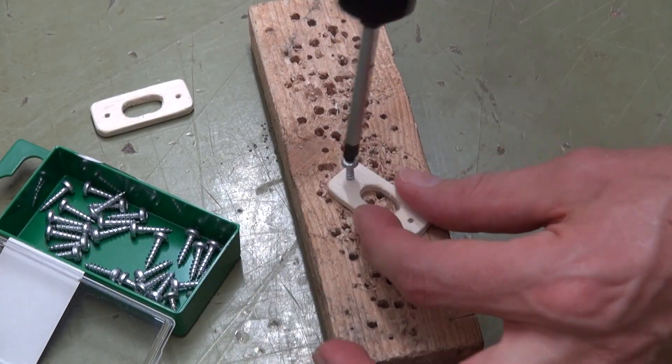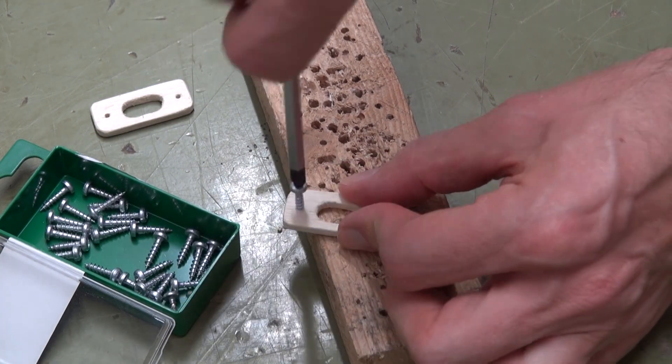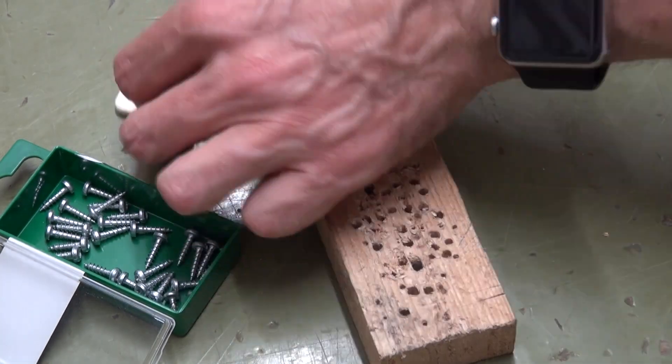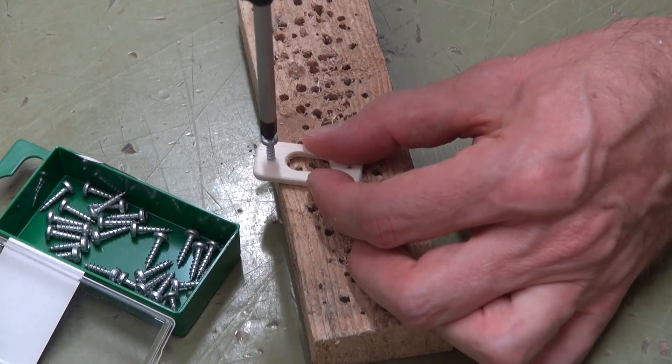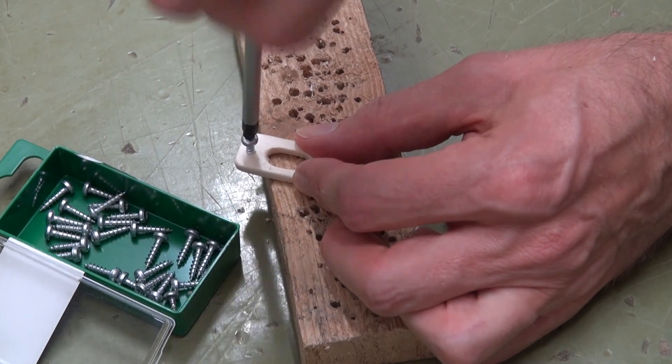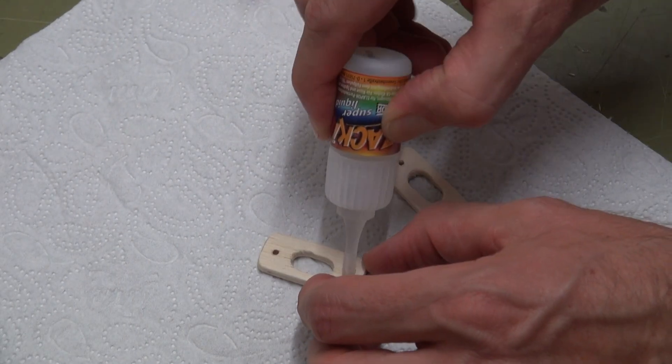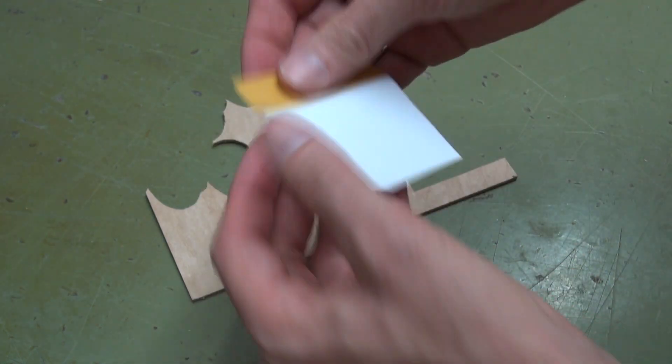Take a 3 by 12 millimeter pan head screw and screw it in and out once for each of the four holes. Then add some CA glue to harden the threads.